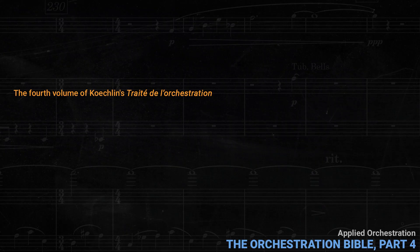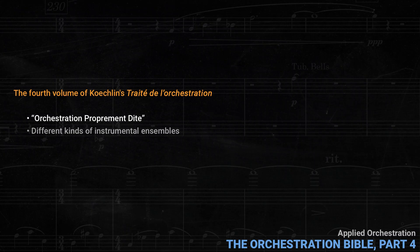The fourth and final volume of Koechlin's Traité de l'Orchestration continues the section called Orchestration proprement dit, which is chapter 4, and adds two more chapters: one about different kinds of instrumental ensembles, and the last one about orchestral colour. This continuation of chapter 4, which started in the previous volume, goes into many very important problems in depth.